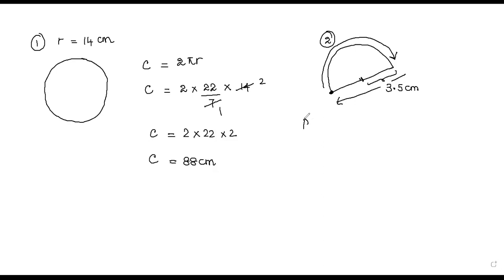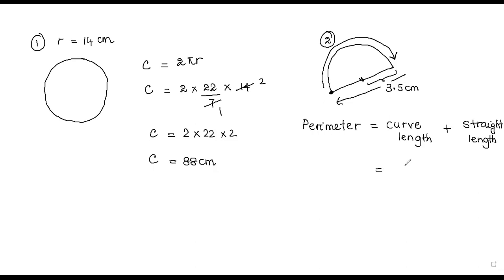So the perimeter equals curve length plus straight length. You have the curve part and the straight path. For the curve length: the full circle is 2πr, but here I have a half circle, so I divide by 2. The straight length consists of this radius value and this radius value — from here to here is one radius, from here to here is another radius — so altogether it is 2r. So r plus r means 2r. When you simplify these two, you get πr.